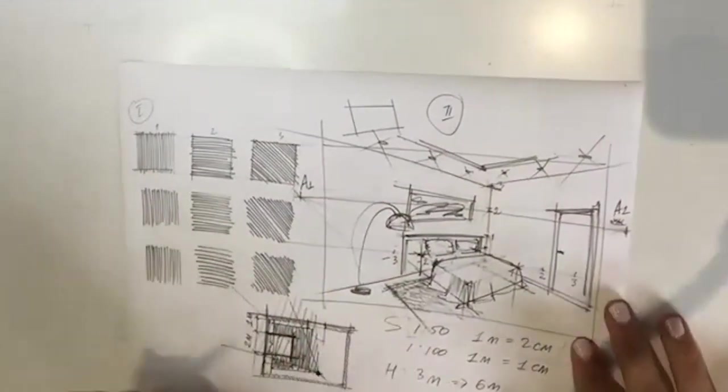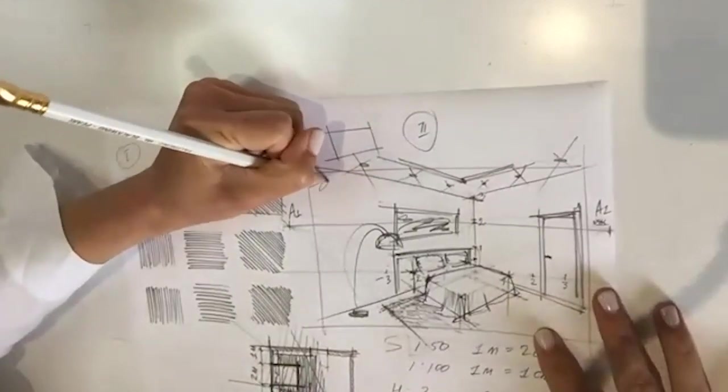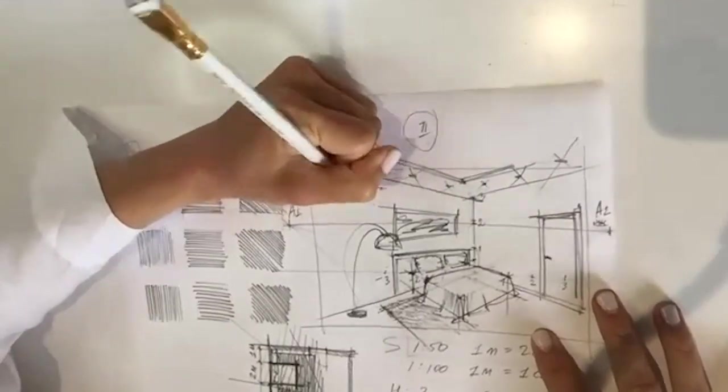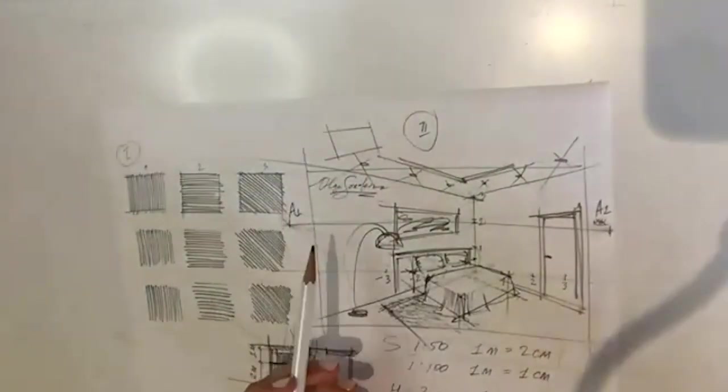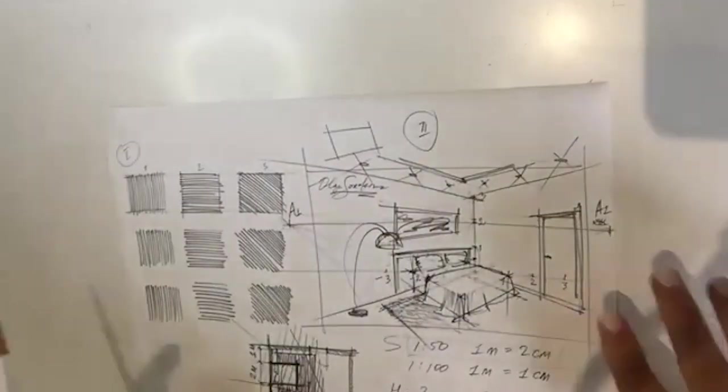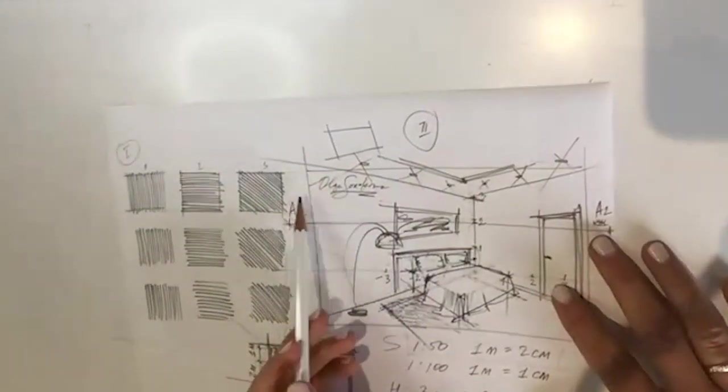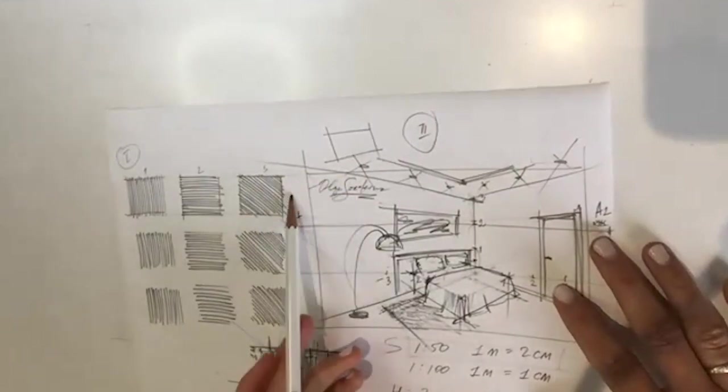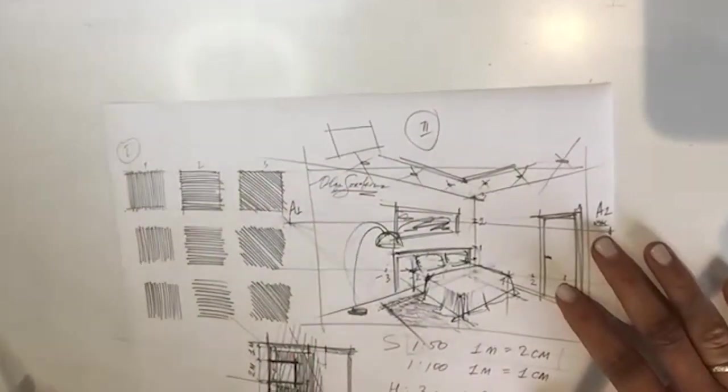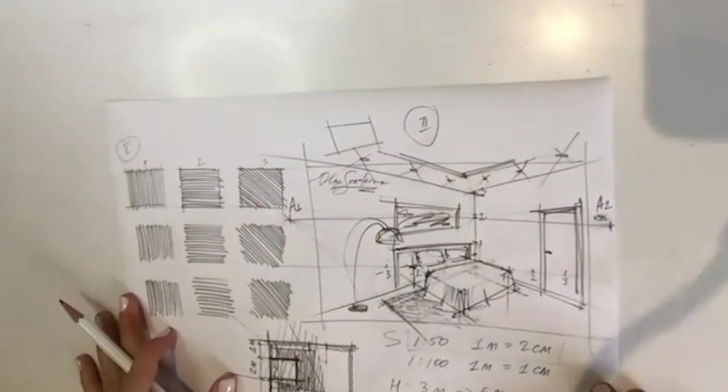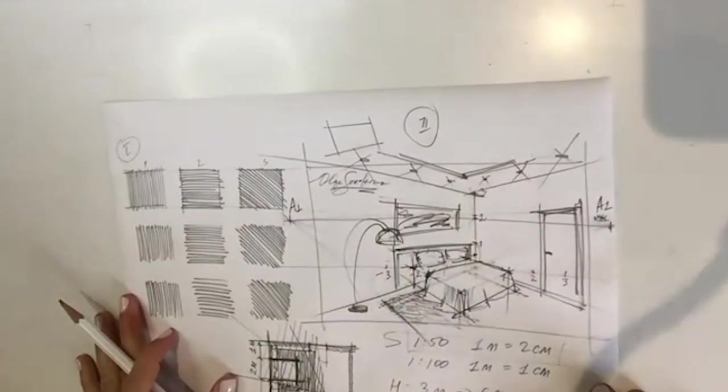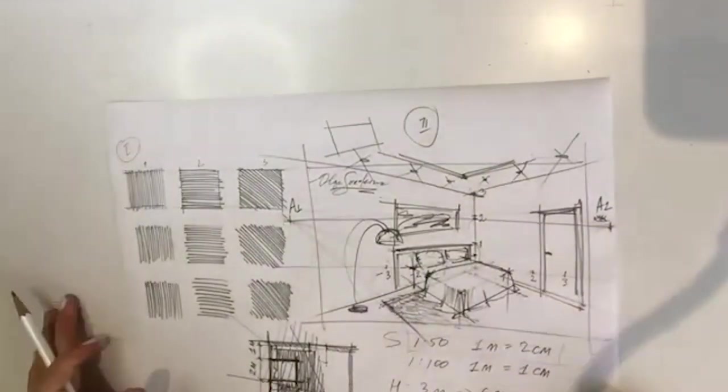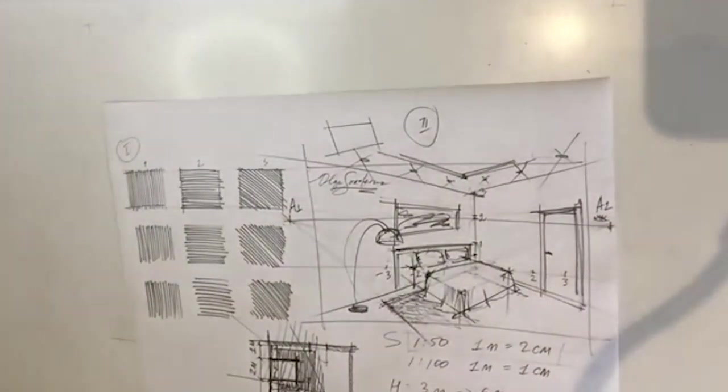And at the very end of this drawing, I always recommend to put a signature on top of it. Because especially in our age of Instagram and Pinterest, images spread through the internet. And it's always good to know who's the author of the sketch. So we want to put either our name or the name of the project. And that's it, you guys, for this quick little tutorial, like introduction to amazing two-point perspective and interior sketching.